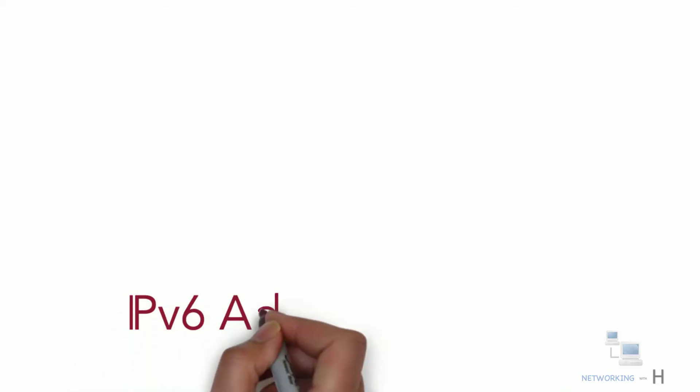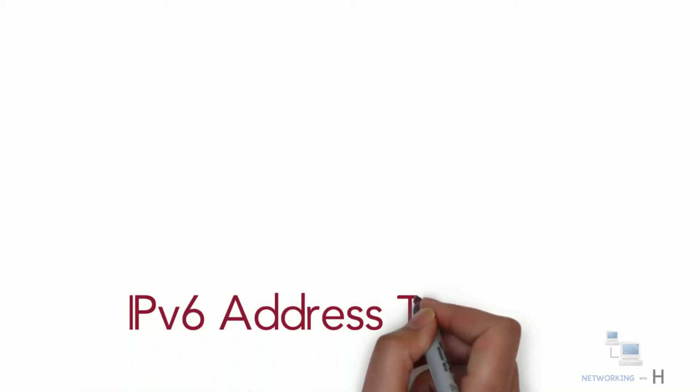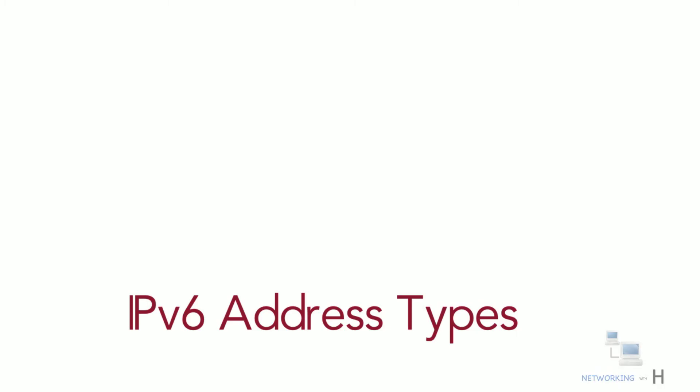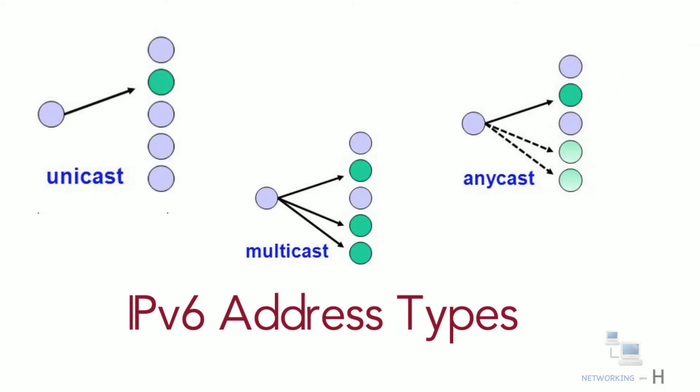In this session of the CCNA series, I'll discuss the different types of IPv6 addresses. There are three major categories of IPv6 addresses: unicast, multicast, and anycast.